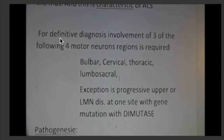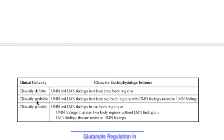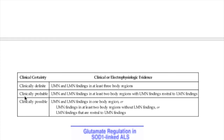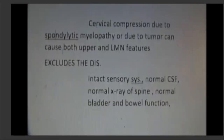The diagnostic criteria require definitive diagnosis with involvement of three of the following four motor neuron regions: bulbar, cervical, thoracic, and lumbosacral. Clinically definite diagnosis requires upper and lower motor neuron findings in at least three body regions. Clinically probable requires findings in at least two body regions. Clinically possible requires findings in only one body region. The most important differential diagnosis is cervical cord compression due to spondylotic myelopathy or tumor, both of which can cause upper and lower motor neuron features.